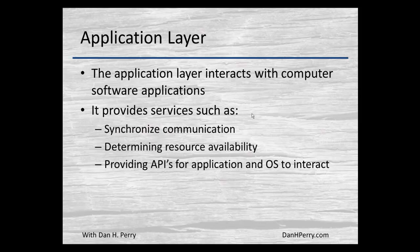The application layer is where we interact with computer software. It provides synchronized communications — it synchronizes communications between the actual applications such as Microsoft Word or your web browser and the data communications. It helps in determining resource availability so that when you tell it to save a file on a network drive, it will check to make sure that network drive is available and the proper mappings. It also provides the API, or application program interfaces, necessary for the application and the operating system to interact with your network.